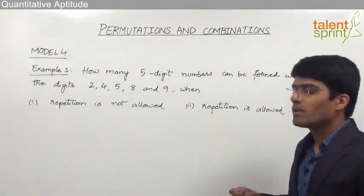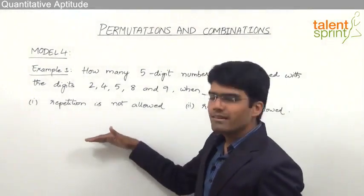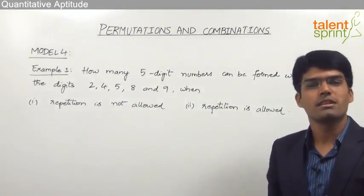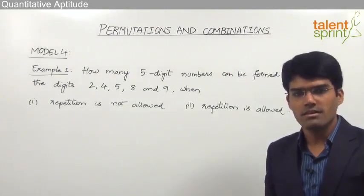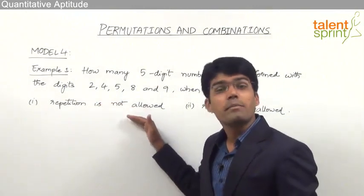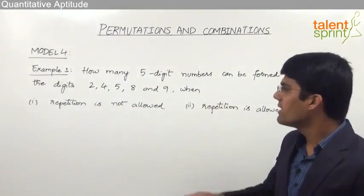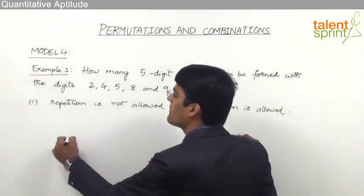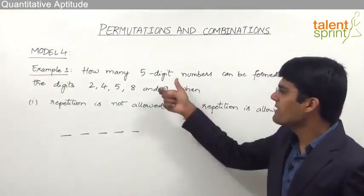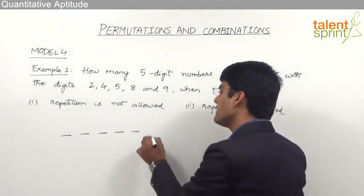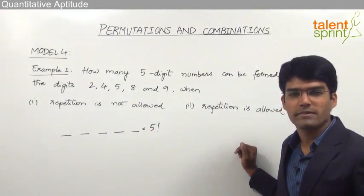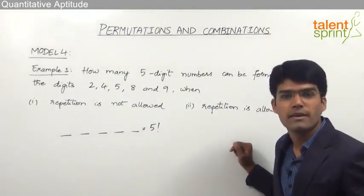The first part is quite similar to what we have done in example 1 — forming a 4-digit number from given digits. In general, when nothing is specified, we take it for granted that repetition is not allowed. So here we have 5 digits and need to form 5-digit numbers. Five digits in 5 positions can be arranged in 5! ways, which is 5P5 = 5! = 120.